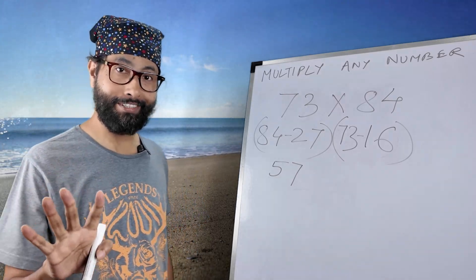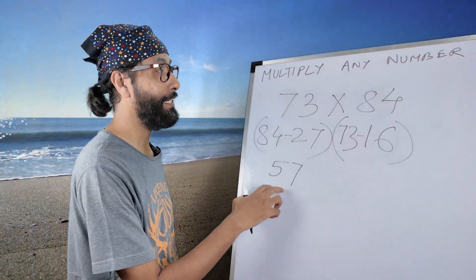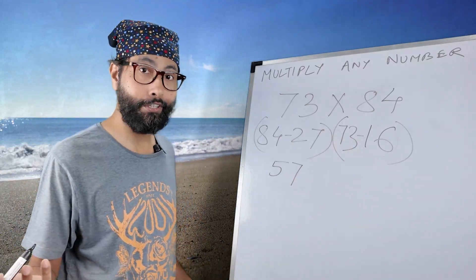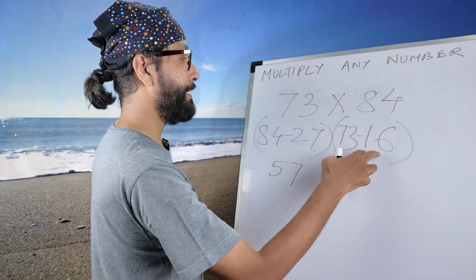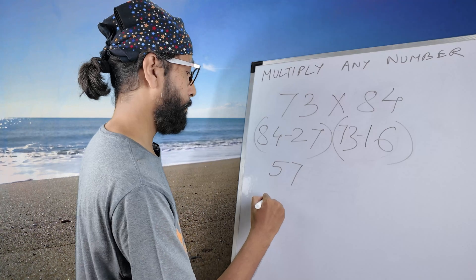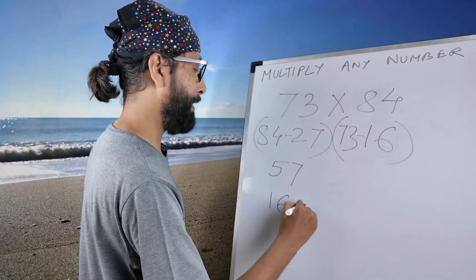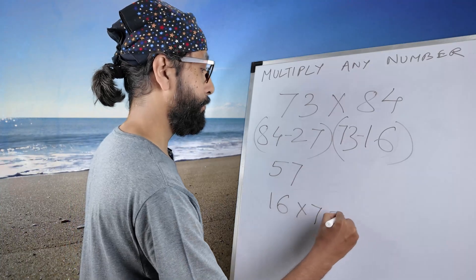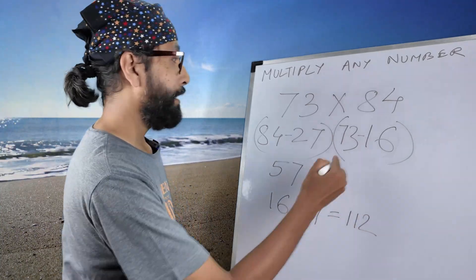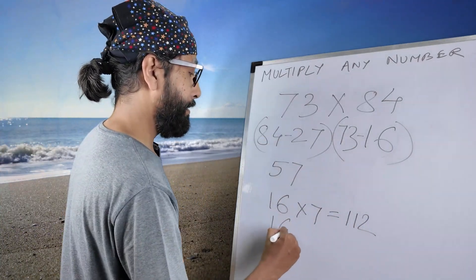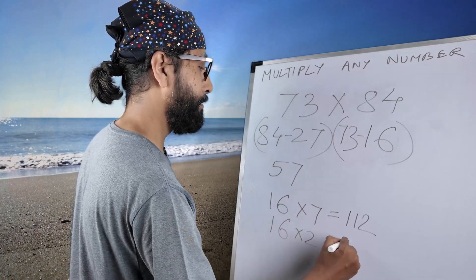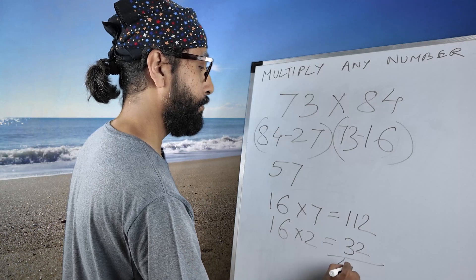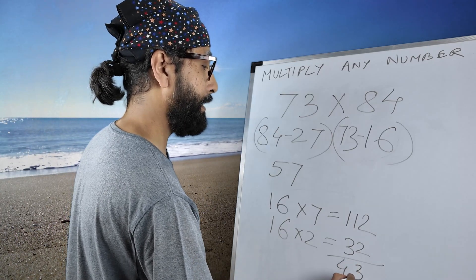But slow, my friends, slow. This is not the final answer because this time 16 into 27, what is the value? We don't know. Okay, let's find it out. 16 multiplied by 7, what is the value? 112. And 16 times 20 is 320. So the final answer will be 432, right?